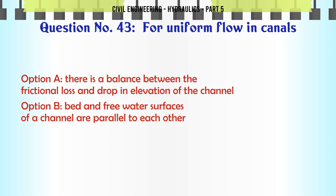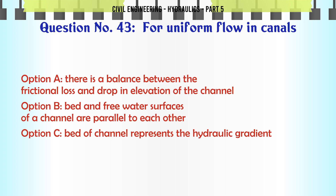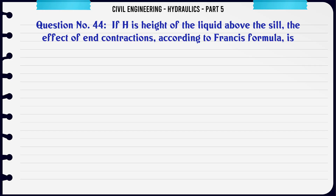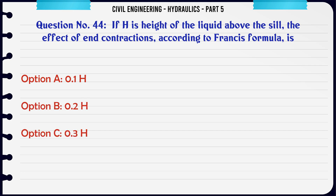For uniform flow in canals: A. there is a balance between the frictional loss and drop in elevation of the channel, B. bed and free water surfaces of a channel are parallel to each other, C. bed of channel represents the hydraulic gradient, D. all the above. The correct answer is all the above.